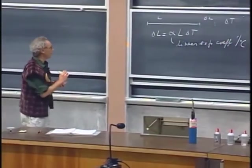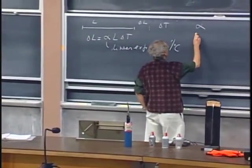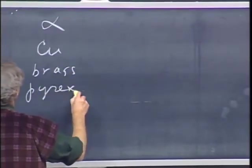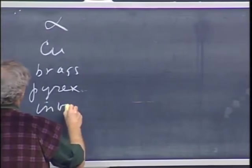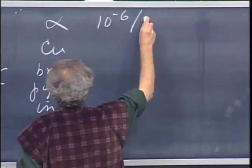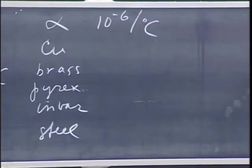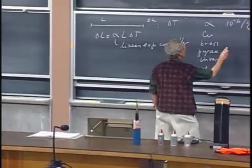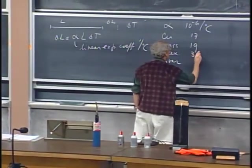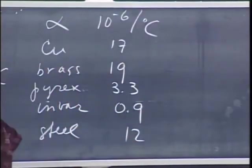The various values for alpha differ a great deal. I'll give you some values for alpha. I'll give you copper, brass, pyrex, invar, and steel, and they are in units of ten to the minus six per degree centigrade. And we will use some of them today. Brass is about 19. Copper is 17. Pyrex, 3.3. Invar, 0.9. And steel is roughly 12, but there are many different kinds of steel.